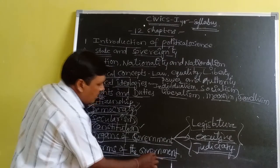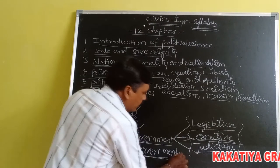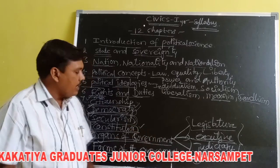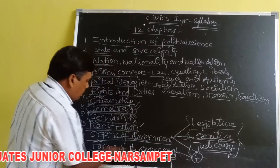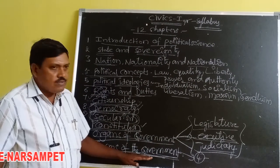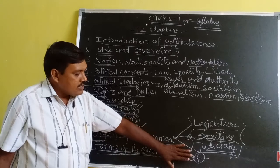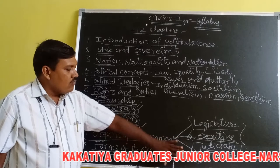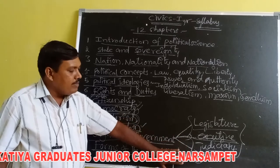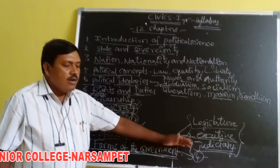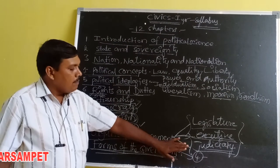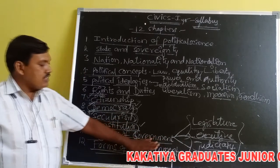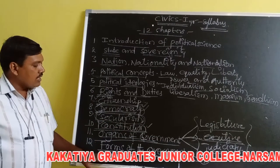The twelfth and final chapter is Forms of Government. Governments are of four kinds: unitary government, presidential government, parliamentary government, and federal government. We will study the relationship between parliamentary and presidential government, and between unitary and federal government, along with the merits and demerits of each form.